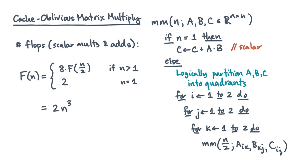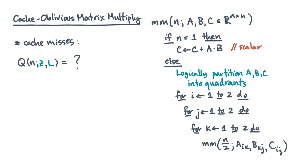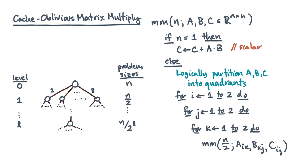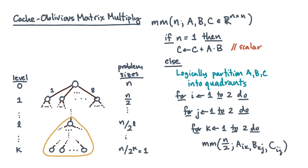What about cache misses? Imagine the recursion tree — each node is a function call, there's eight-way branching at each node, and the leaves correspond to the base case. The problem size shrinks progressively from n down to one. At some point in this recursion, all the operands of a subtree fit in cache. Let's say that level is little l, and call that size n sub l.